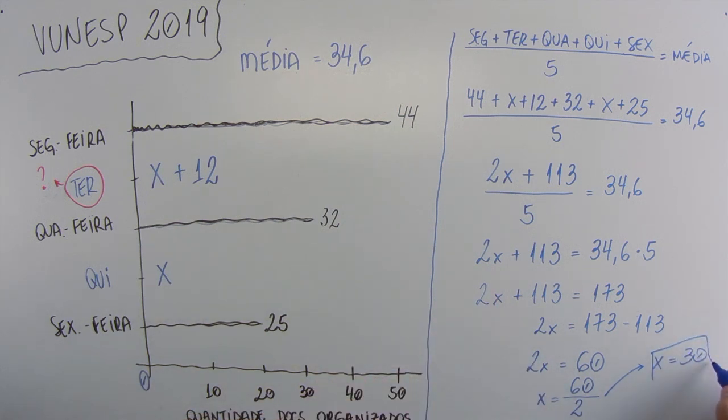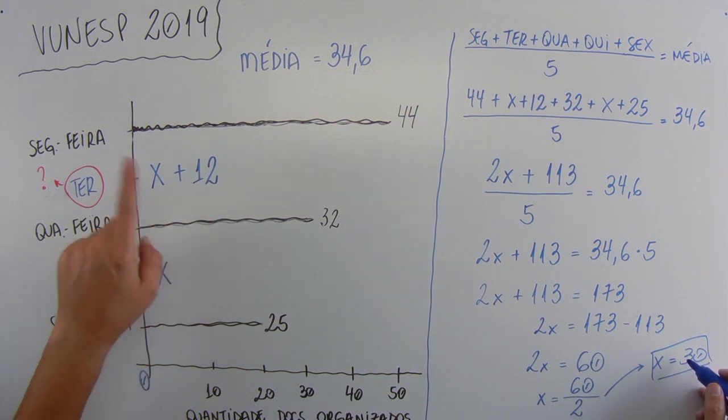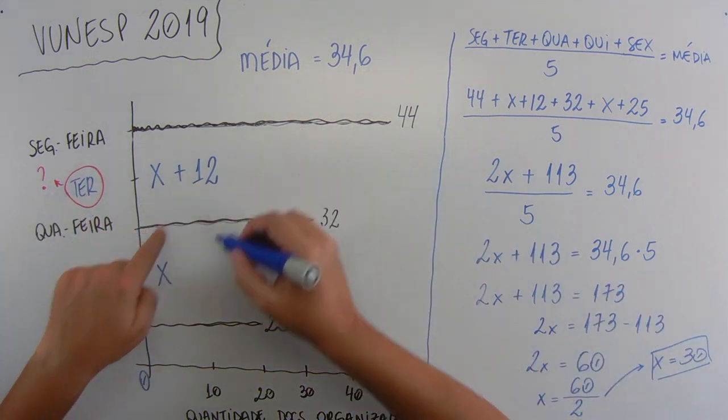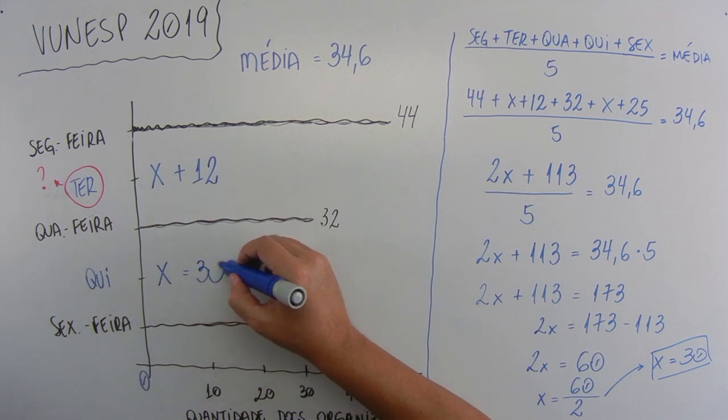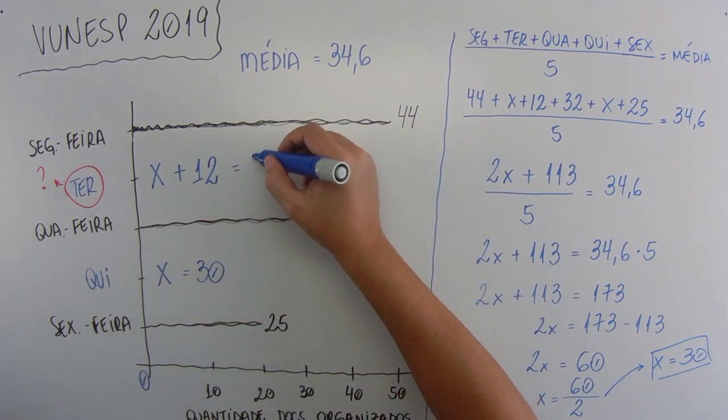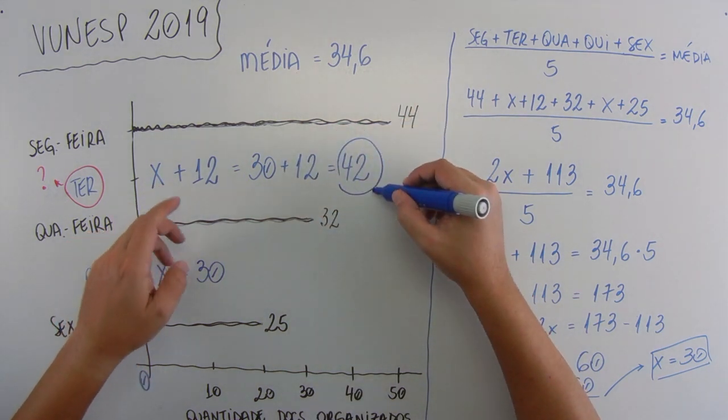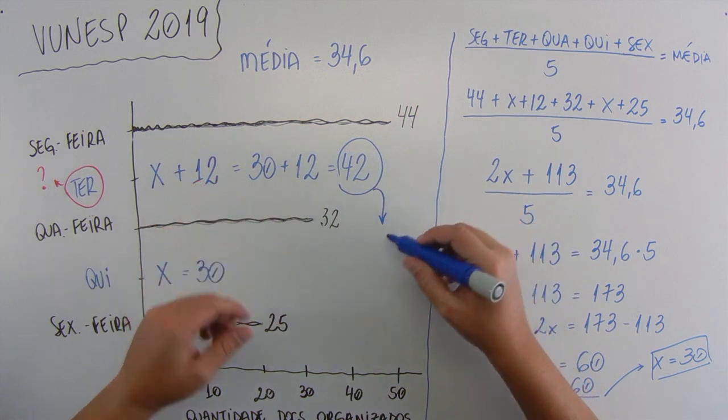60 divided by 2 will give 30. And then, for those who are anxious, go there, run to the alternatives and look for 30. It's not yet time to look for X, because the X that we want is Tuesday. And Tuesday is X plus 12. So, X is worth 30. Luckily it's not in the alternatives. 30 plus 12 which gives 42. And 42 is in alternative A.